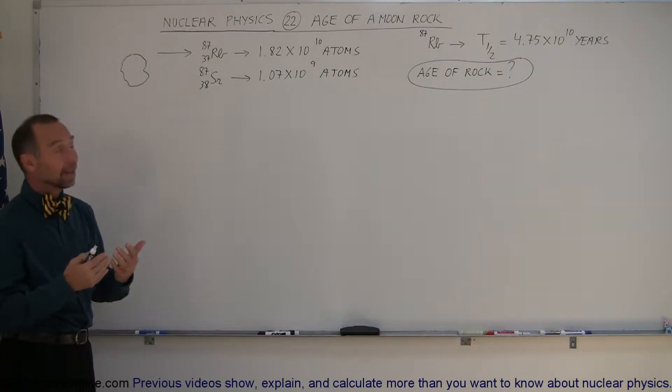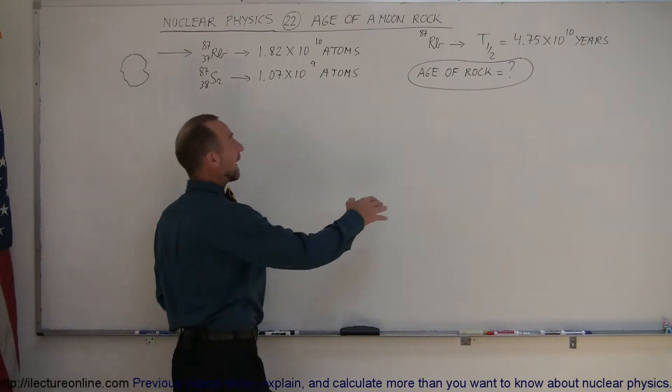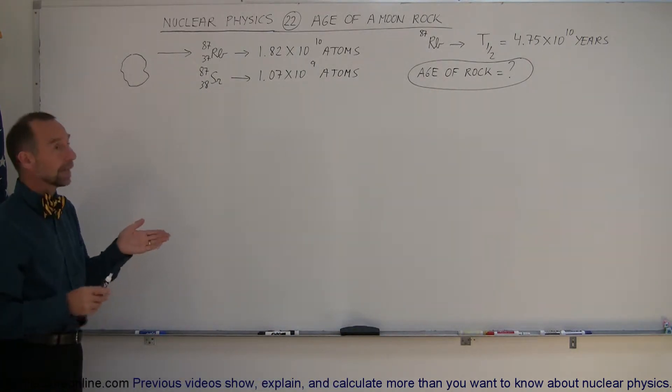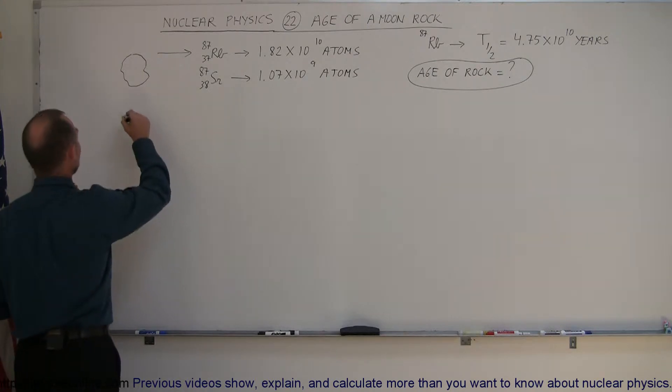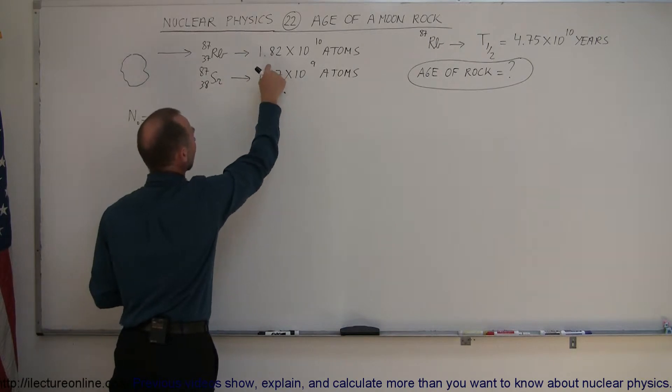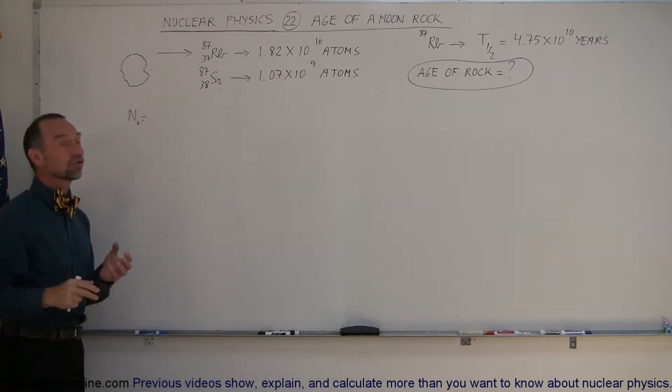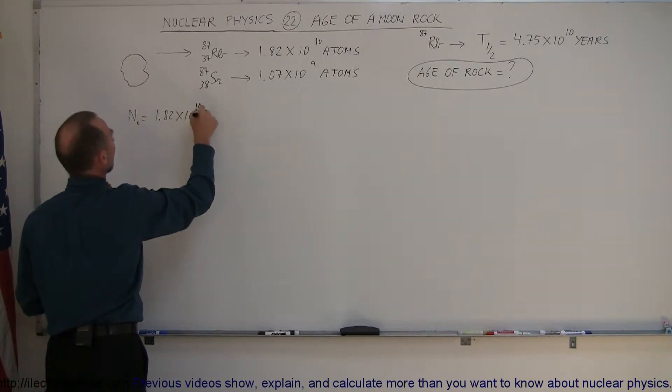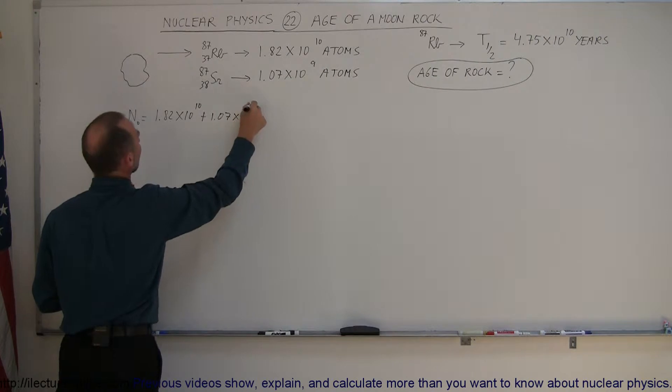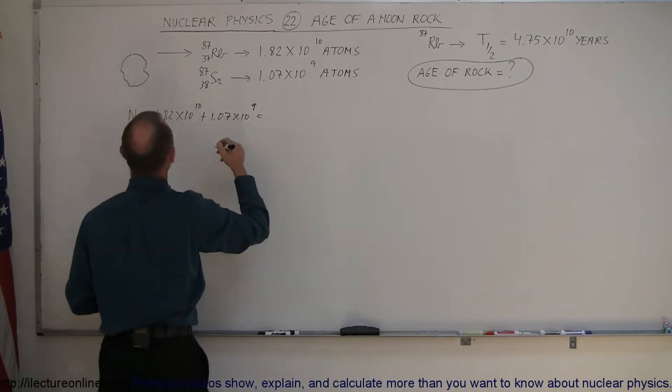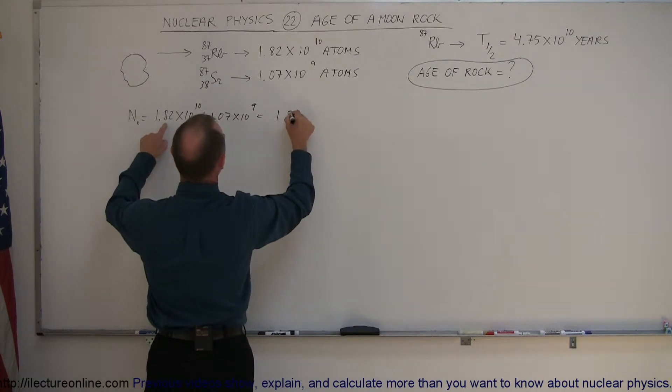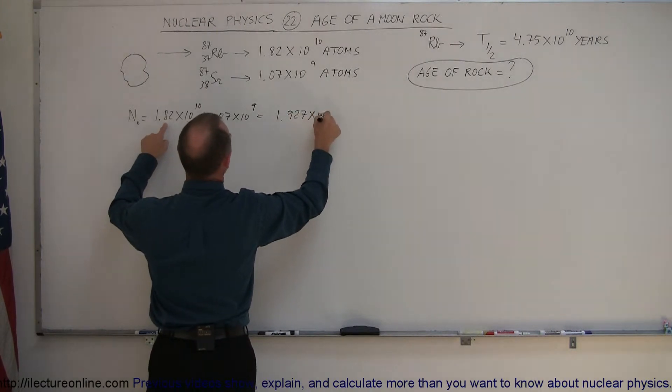All right, assuming that, let's find out if we can find the age of the rock. So first we need to figure out how many total rubidium atoms were there to begin with. The initial number is going to be the total of the rubidium that's left plus the rubidium that has changed into strontium. So that's going to be 1.82 times 10 to the 10th plus 1.07 times 10 to the 9th. And if we add that together, we get 1.927 times 10 to the 10th.